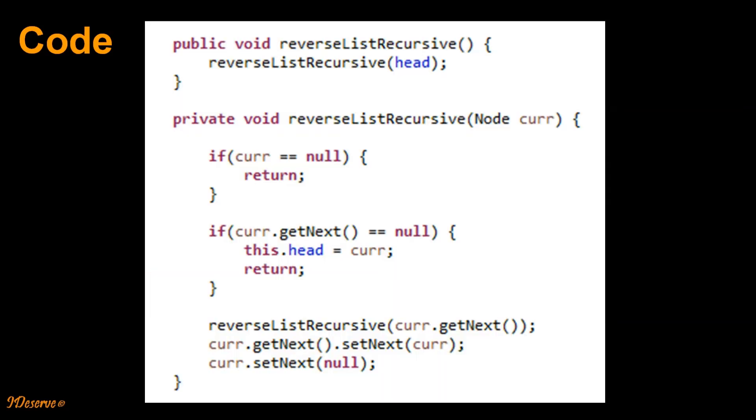We will quickly look at the code. Code looks exactly similar to the algorithm with five steps. First we check if current equals null. If it is null, we return. The second step is if current.next is null, then we make this as a head pointer and then we return.